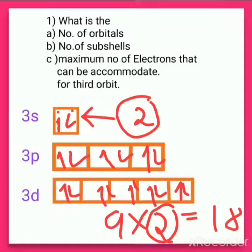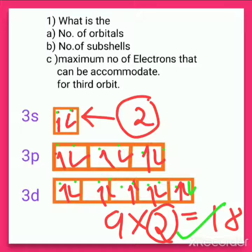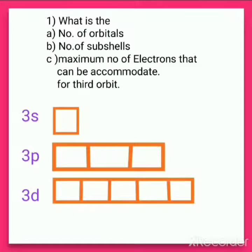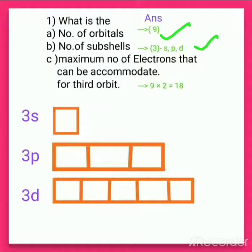When you multiply nine orbitals by two, you get 18. Counting all the electrons across the boxes gives: 1 through 18, that is 18 electrons total. So instead of counting individually, you can directly calculate: number of orbitals × 2 = 18. The maximum number of electrons that can be accommodated in the third orbit is 18.